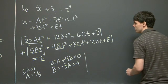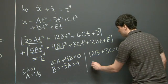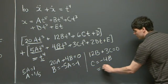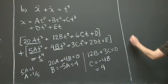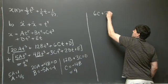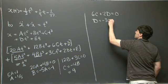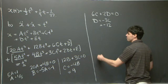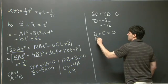For the quadratic terms: 12b plus 3c equals 0, so c equals negative 4b equals 4. For the linear terms: 6c plus 2d equals 0, giving d equals negative 3c equals negative 12. And the constant term: d plus e equals 0, giving e equals 12.